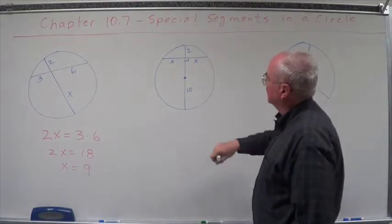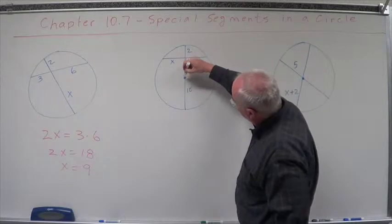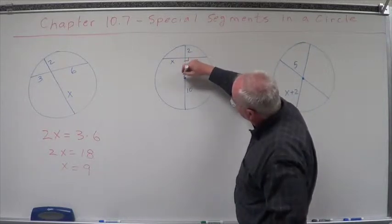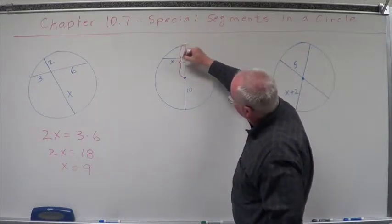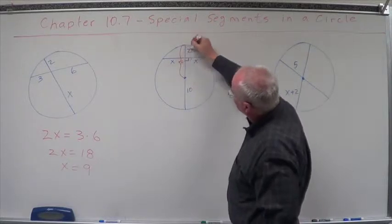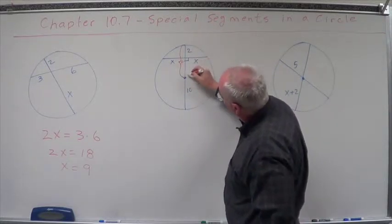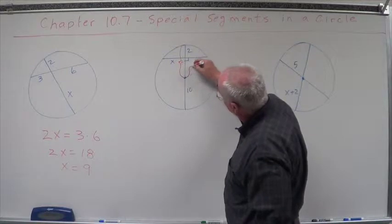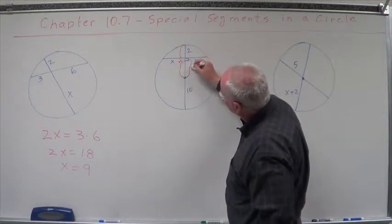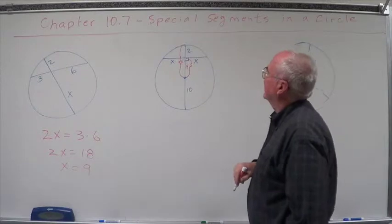We know x times x is no big deal. This whole thing here, let's look at it. This whole thing here is 10. We've got 2 out, so that means this portion right here is 8.